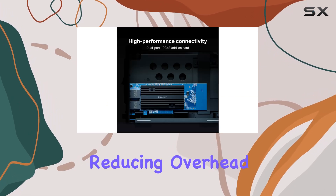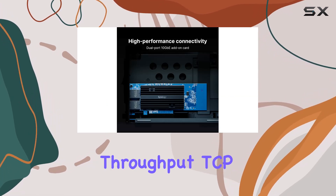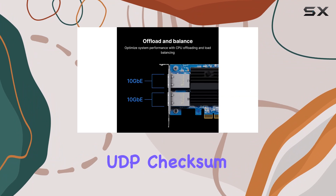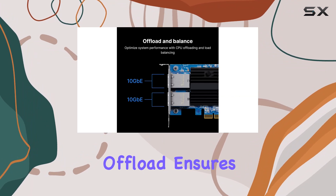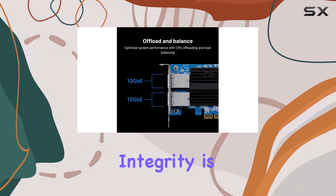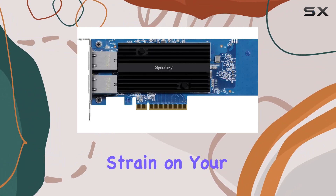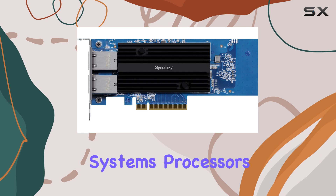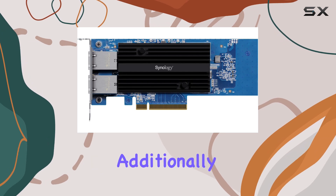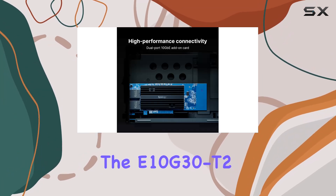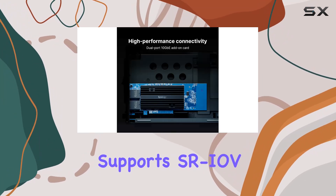Jumbo frames reduce overhead and increase throughput. TCP/UDP checksum offload ensures that your data integrity is maintained without putting extra strain on your system's processors. Additionally, the E10G30T2 supports SR-IOV,